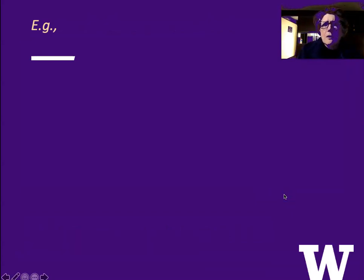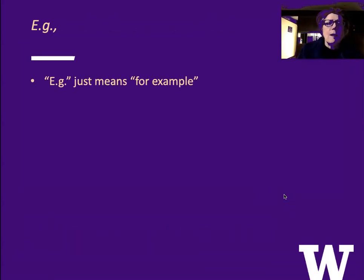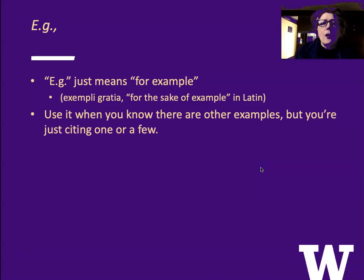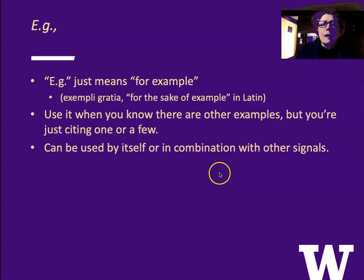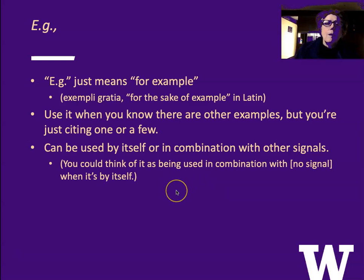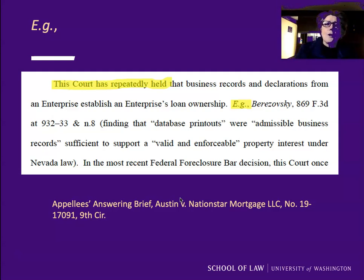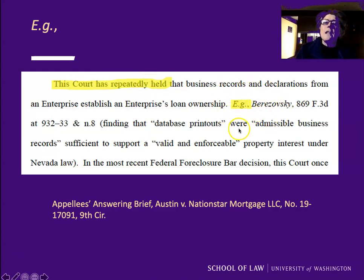E.g. is about what it means in our regular life — it means 'for example'; if you're a stickler, the Latin is exempli gratia. Use it when you know that there are other examples but you're just citing one or a few. It can be used by itself or in combination with other signals. Here's an example from a brief: 'This court has repeatedly held [proposition], e.g., Berezovsky.' The author is saying the court has done something many times; there are a lot of cases — 'I'm citing this case, e.g.,' and that means there are others.